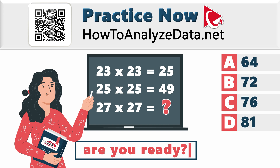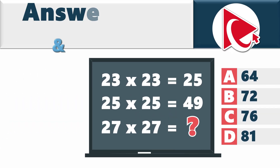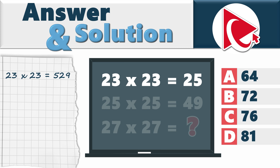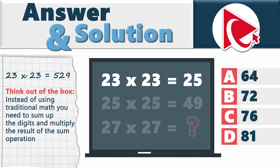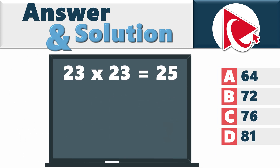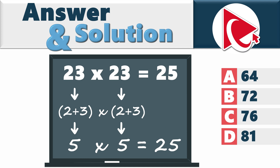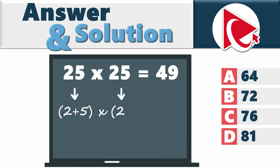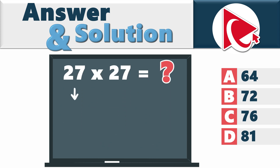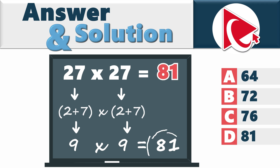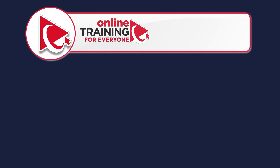In the typical world 23 × 23 = 529, but here you think outside the box: sum the digits and multiply the result. For 23: (2 + 3) × (2 + 3) = 5 × 5 = 25. For 25: (2 + 5) × (2 + 5) = 7 × 7 = 49. So for 27: (2 + 7) × (2 + 7) = 9 × 9 = 81. The correct answer is choice D — 81.